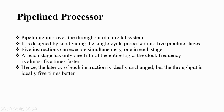In this lecture we are going to deal with pipelined processor design. In the previous lecture we have seen how to design the data path and control unit for a single cycle processor. From this lecture onwards we are going to see how to design the data path and control unit for a pipelined processor. Pipelining improves the throughput of a digital system — whatever processor you are taking, if it is a pipeline processor, the throughput will be increased. It is designed by dividing a single cycle processor into five pipeline stages.